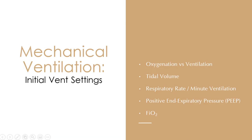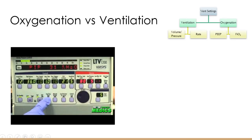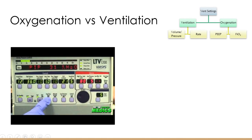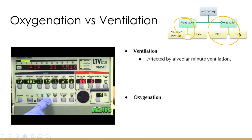Moving to the main reason why you're here — mechanical ventilation, initial vent settings. Your settings are mostly split into two main categories: ventilation and oxygenation. Ventilation is affected by your alveolar minute ventilation, which is tidal volume minus anatomical dead space times respiratory rate. Most of the time you'll see minute ventilation expressed simply as tidal volume times respiratory rate.